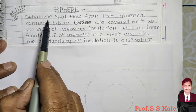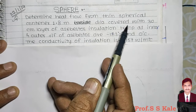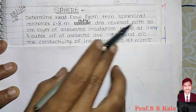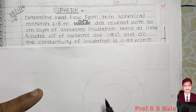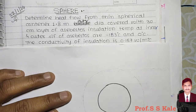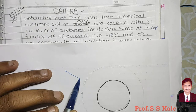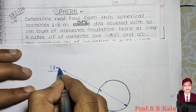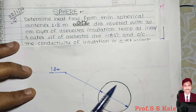The problem: determine heat flow from a thin spherical container of 1.8 meter outer diameter covered with a 30 centimeter layer of asbestos. So I draw a spherical container here — this is a spherical container of 1.8 meter diameter, and over this there is a 30 centimeter layer of asbestos.